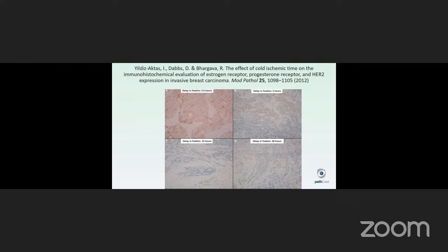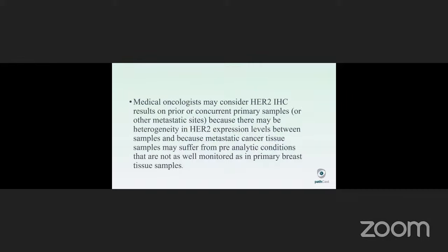It is important to stress that these analytic conditions should not only be observed in breast, but also something that we forget is in the metastatic samples that you're going to be working up, ruling out breast cancer and staining for HER2-IHC. And thus, you should make your oncologist aware when they're giving you samples to make sure that they follow these ischemic guidelines, pre-fixation, pre-ischemic and fixation guidelines. Because medical oncologists may consider HER2-IHC results on prior or concurrent primary samples in other metastatic sites as well, because there may be heterogeneity in HER2 expression levels between samples and because metastatic cancer tissue samples may suffer from pre-analytic conditions that are not as well monitored as in primary breast tissue samples.